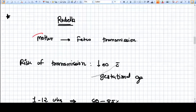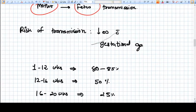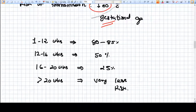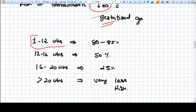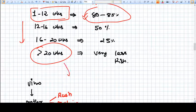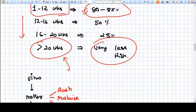Rubella is a problem because there is transmission of virus from mother to fetus through placenta. What is the risk of transmission? The risk decreases with increasing gestational age. If the mother gets the viral infection within 1 to 12 weeks of pregnancy, then the chances of the baby getting the problem or congenital rubella syndrome are 80 to 85%. Whenever the pregnancy is more than 20 weeks and the mother gets infection first time, there is very less risk of transmission.